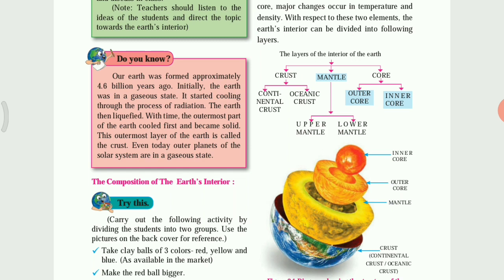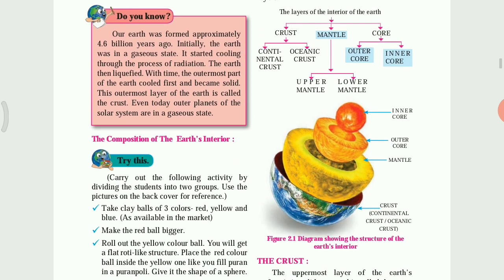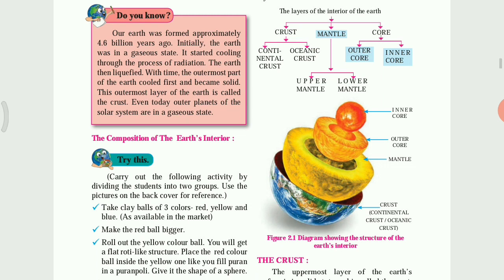Now you can see this figure. Here the layers of the interior of the earth are given. There are three layers: crust, mantle, and core. A pie chart is given here showing the layers of the interior of the earth. Crust has two parts — continental crust and oceanic crust. Mantle also has two parts — upper mantle and lower mantle. And core also has two parts — outer core and inner core.